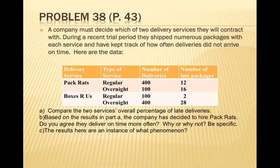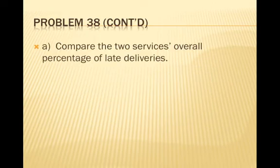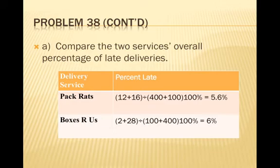Now we look at Simpson's Paradox — problem 38 on page 43. A company must decide which of two delivery services to contract with. During a trial period they shipped numerous packages and tracked late deliveries. For Pack Rats: 400 regular deliveries with 12 late, and 100 overnight deliveries with 16 late. For Boxes R Us: 100 regular deliveries with 2 late, and 400 overnight deliveries with 28 late. Compare overall percentages of late deliveries.